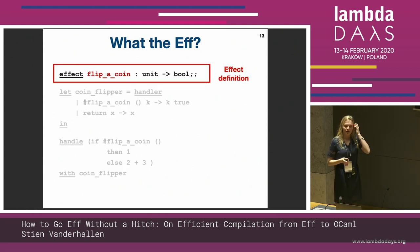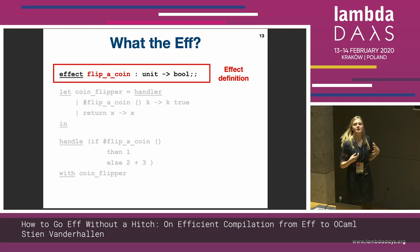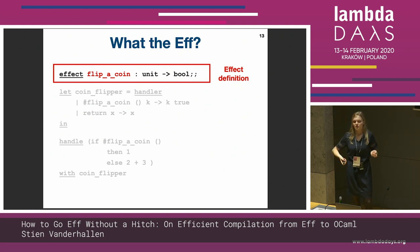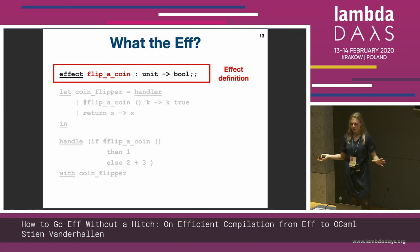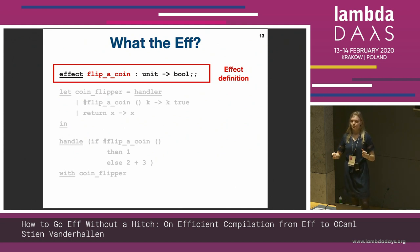There, first of all, we have this definition of an effect that just flips a coin, and we define it as an operation that takes zero arguments and then evaluates to a boolean.